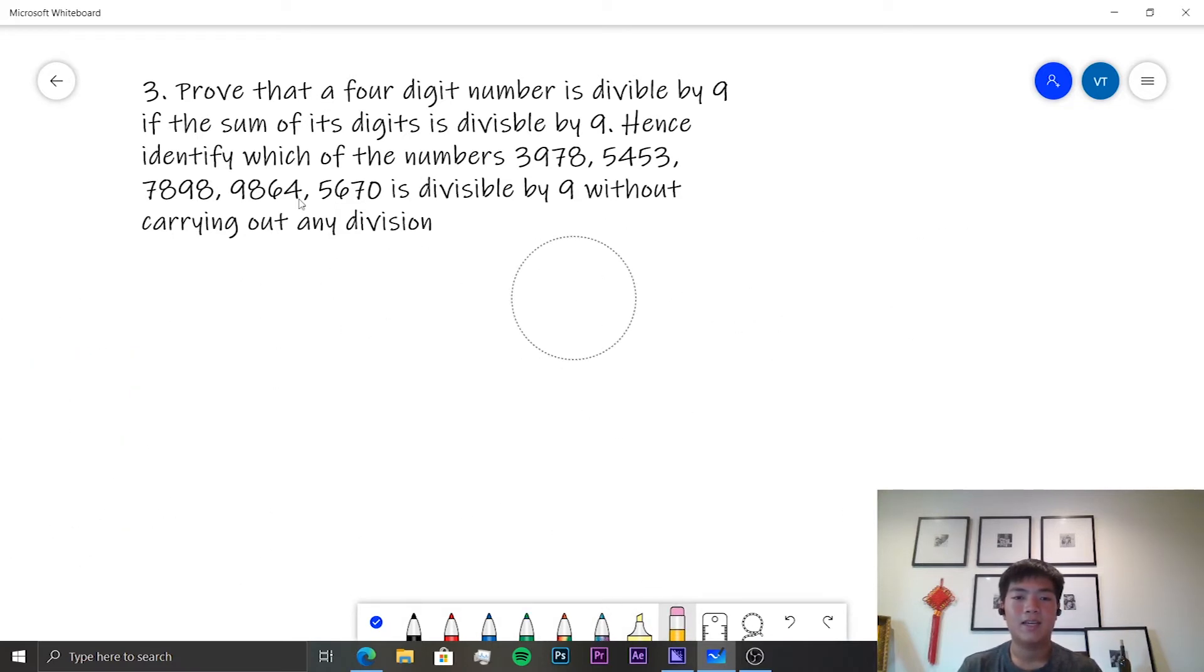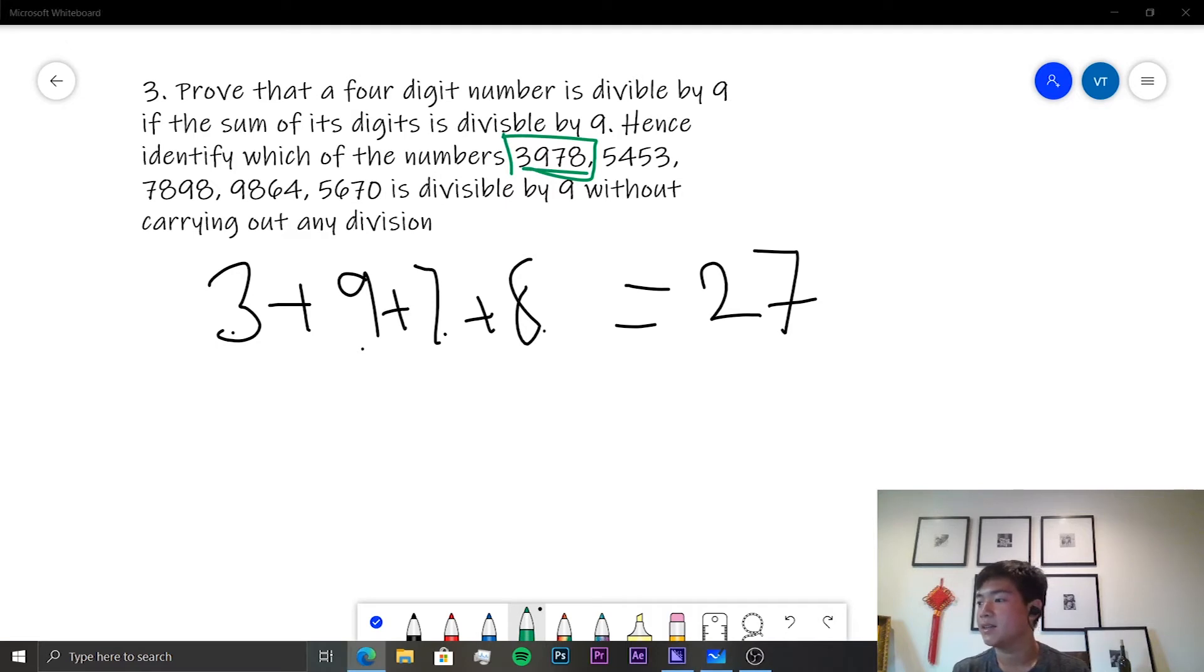Now that we know that, let's identify which of the numbers is divisible. 3978: 3 plus 9 plus 7 plus 8, well 9, 7, and 8 is 15, 18, 27. So it should simply be 3978. Let's just check that we've got that correct. Which of the numbers? So there's more than one.